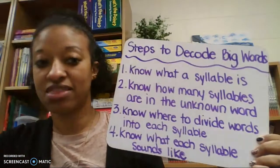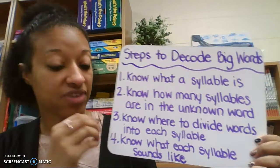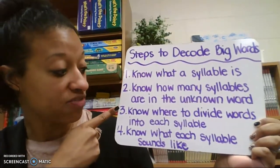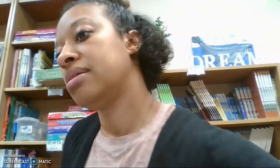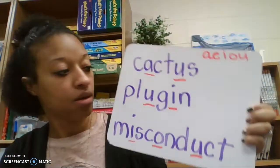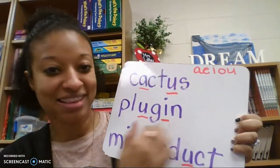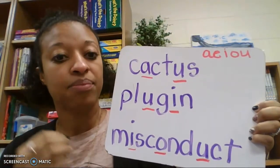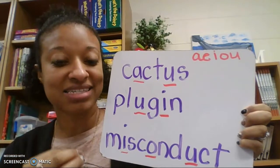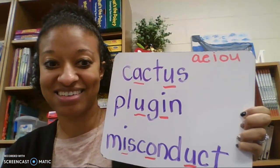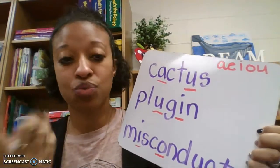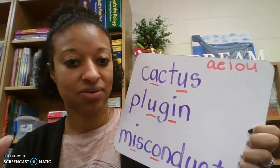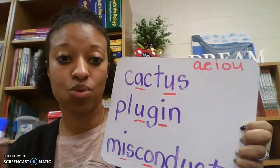Find the vowels. Today we're going to find out number three — we're going to know where to divide the words into each syllable. Let's look at some of the words we started with last time. You cannot divide a word unless it is more than one syllable. For example, if we had the word cat, the whole thing is only one syllable, so we don't need to divide it to figure out how to pronounce it. We only need to divide words that are more than one syllable.